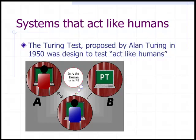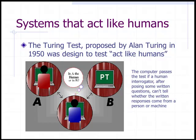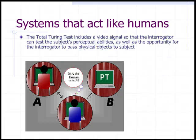The Turing test, proposed by Alan Turing in 1950, was designed to test whether a system acts like humans. The computer passes the test if a human interrogator, after posing some written questions, can't tell whether the written responses came from a person or a machine. The total Turing test includes a video signal so that an interrogator can test the subject's perceptual abilities, as well as the opportunity to pass physical objects to the subject.